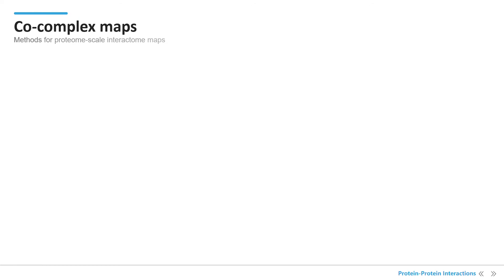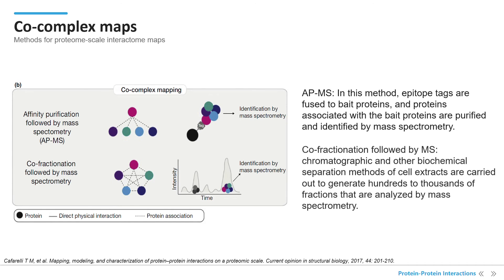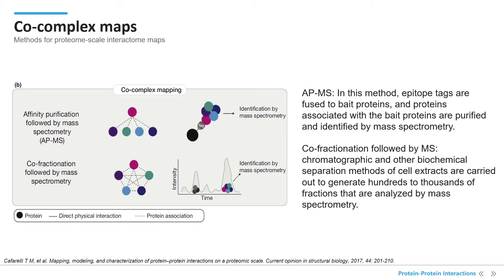In affinity purification and mass spectrometry, epitope tags are fused to bait proteins, and proteins associated with the bait proteins are purified and identified by mass spectrometry. Co-fractionation with mass spectrometry does not need exogenously introduced ORFs or protein tags. Chromatographic and other biochemical separation methods of cell extracts are carried out to generate hundreds to thousands of fractions that are analyzed by mass spectrometry.